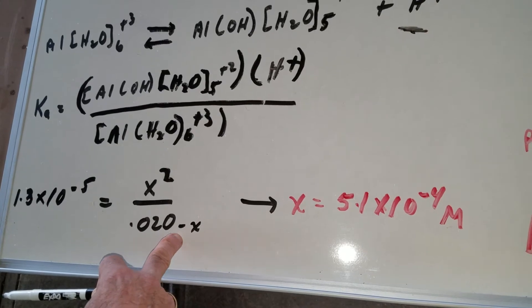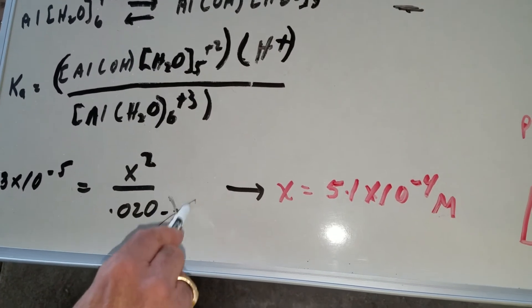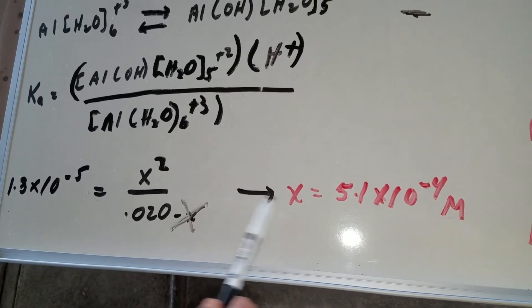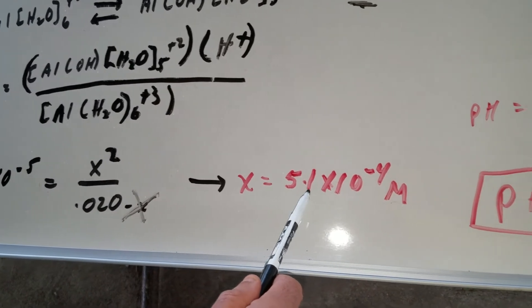We're going to assume that this minus X is very small, so I'm going to negate it. So with this negated, I cross multiply, square root, and I solve for X.